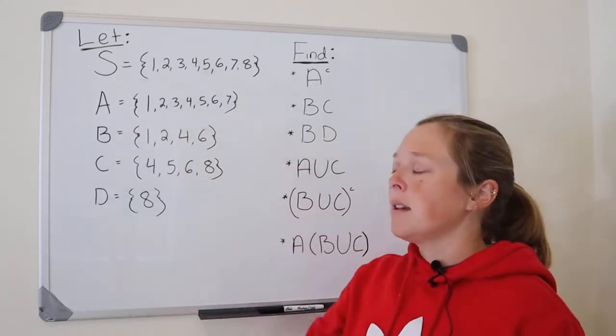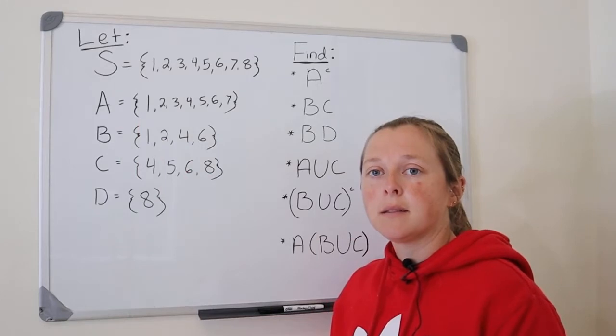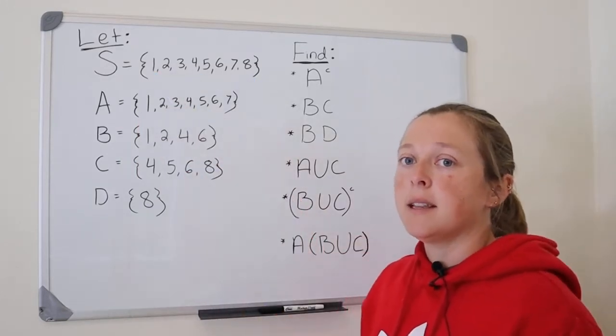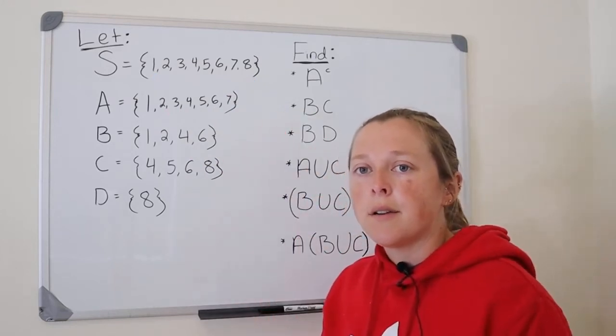Starting with S. S is our sample space, and it's made up of eight elements. In this case, those elements are the numbers one through eight.